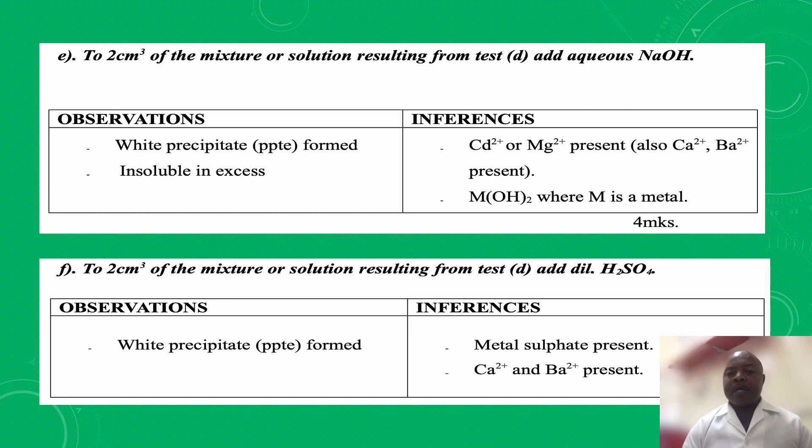On my inference section, the cations, the cadmium or magnesium ions are present, also calcium and barium are present. And then the conclusion is it is a metal hydroxide, a group 2 metal hydroxide M(OH)2 where M is a metal. It is a group 2 metal hydroxide that is there.